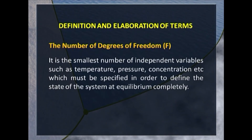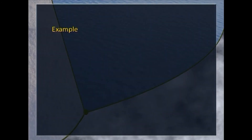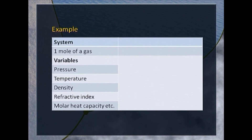The third important term in phase rule is the number of degrees of freedom F. It is the smallest number of independent variables — such as temperature, pressure, concentration — which must be specified in order to completely define the state of the system at equilibrium. For one mole of a gas, we can measure pressure, temperature, density, refractive index, molar heat capacity, viscosity and so on, but is it necessary to specify all these variables?